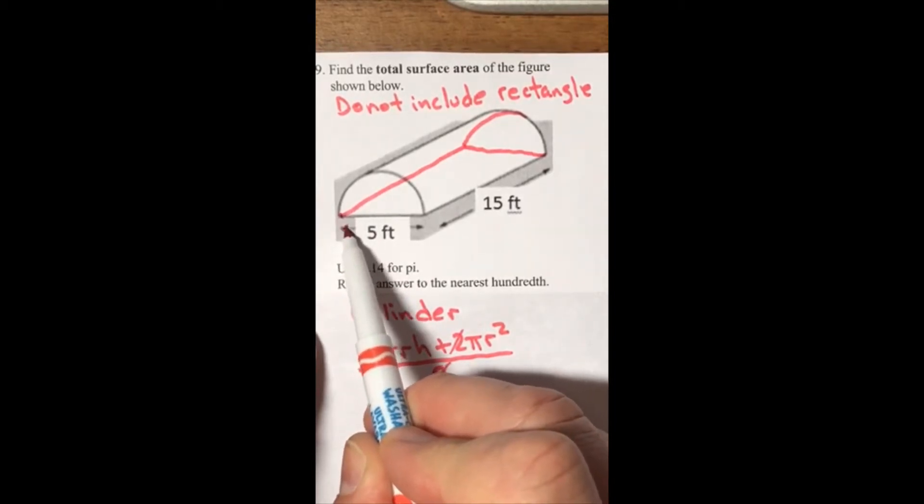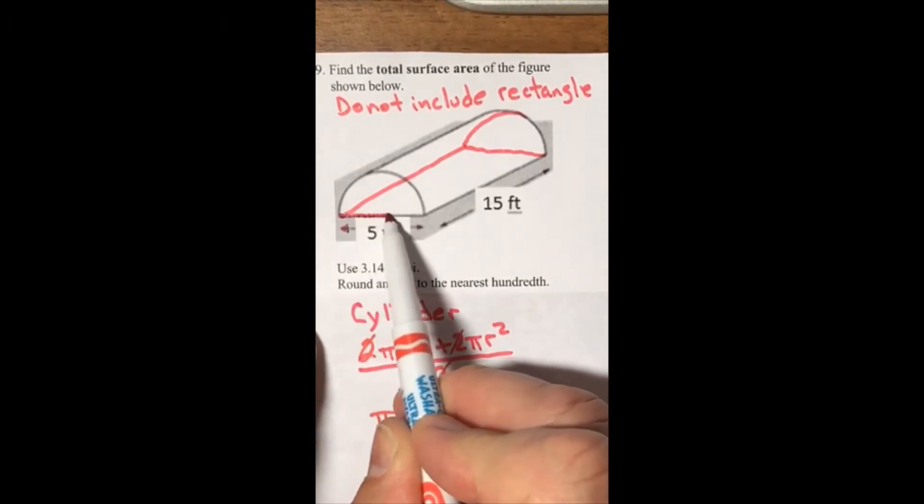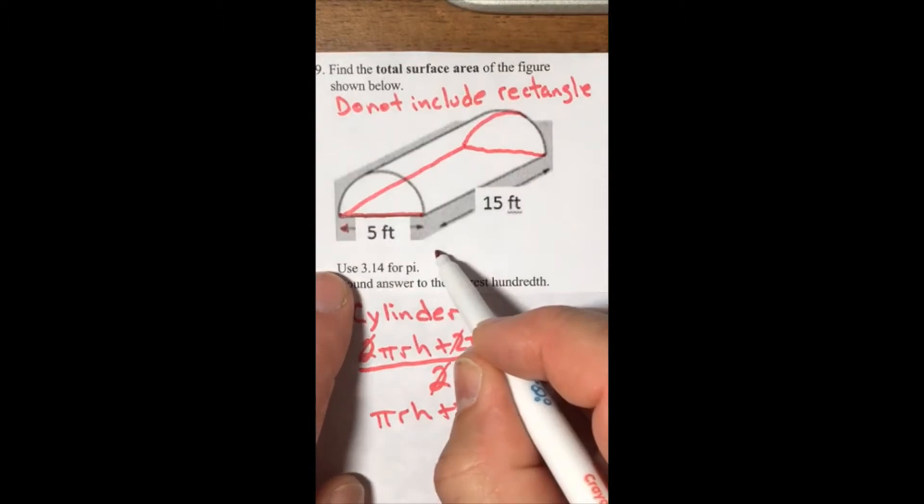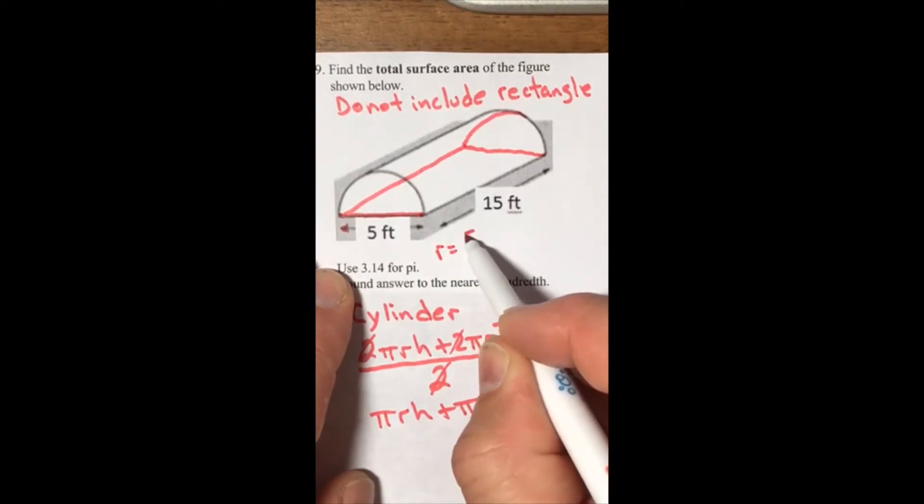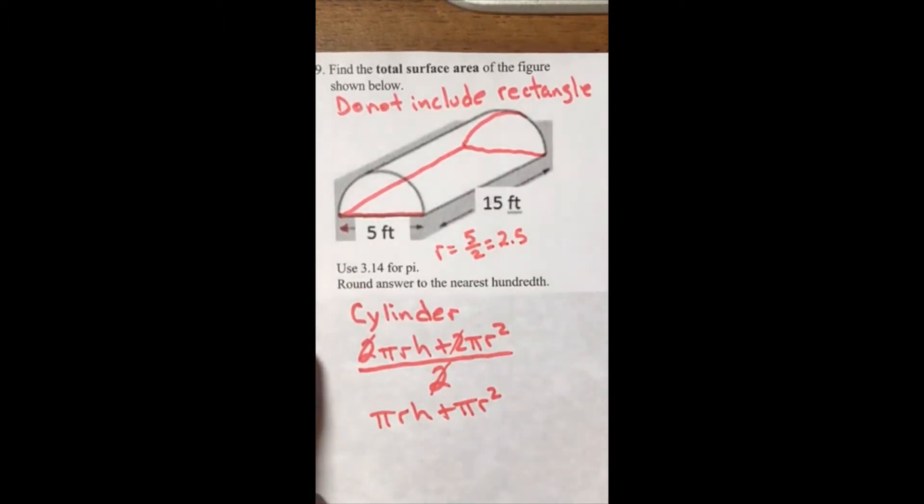R, up here. From this point over, see this arrow is pointing all the way to here, and so is this arrow. That means this is our diameter. So the radius is equal to 5 divided by 2, which is equal to 2.5.